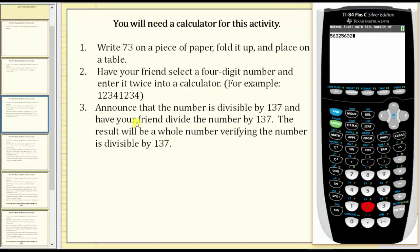announce that the number is divisible by 137 and have your friend divide the number by 137. The result will be a whole number verifying the number is divisible by 137.